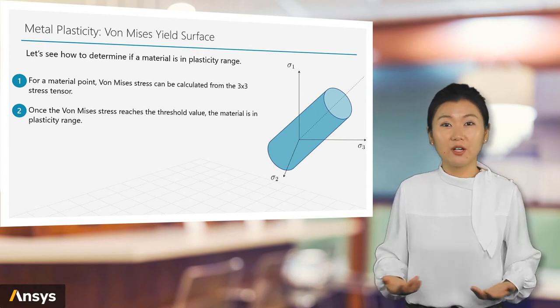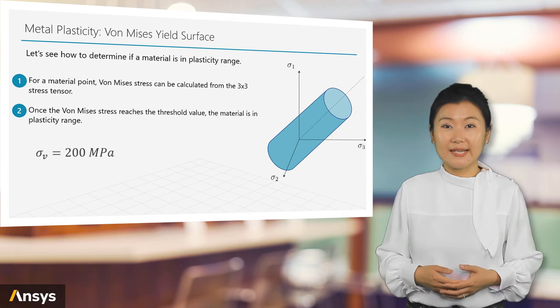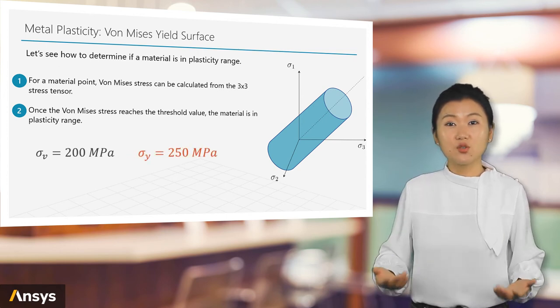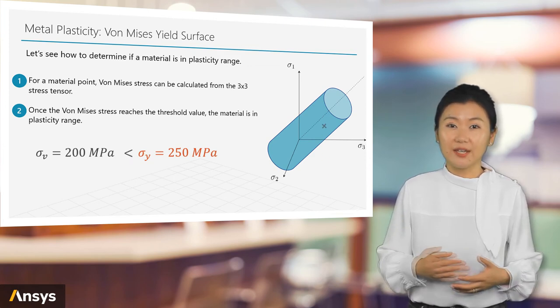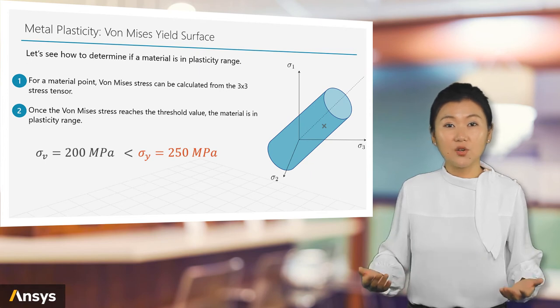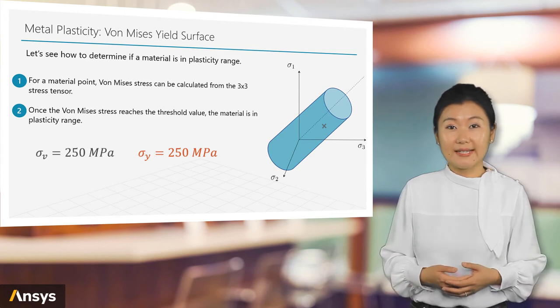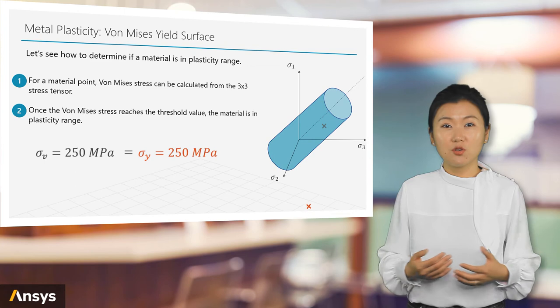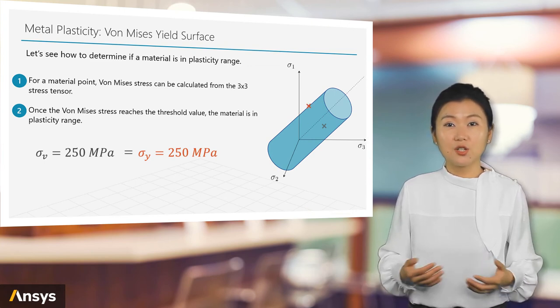Such surface is the initial yield surface of a material. For example, say we're solving a structure. For a certain material point, the Von Mises stress is calculated to be 200 MPa. If the yield stress of the material is 250 MPa, the material state is inside the initial yield surface and still in elasticity. For another material point, if the Von Mises stress is 250 MPa, the material state is on the yield surface, meaning it starts to yield.